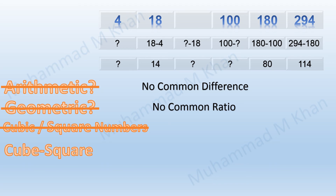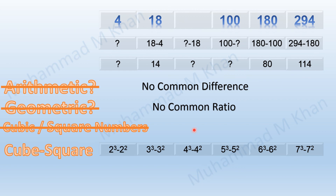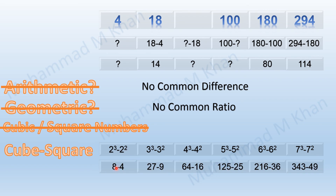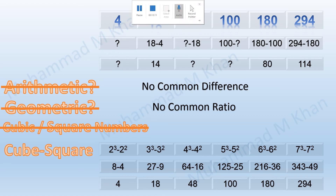Since the difference increases drastically — 14, then 80, then 114 — we check whether the terms follow the pattern n³ − n². For n=2: 8 − 4 = 4 ✓. For n=3: 27 − 9 = 18 ✓. For n=4: 64 − 16 = 48. For n=5: 125 − 25 = 100 ✓. The pattern matches, so the missing third term was 48.